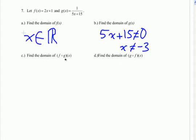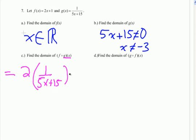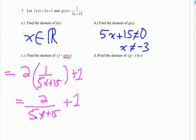Last one: start with f of g of x. The domain of g of x: it's a rational function, denominator can't equal zero. Subtract 15, divide by 5, x can't equal negative 3. Now plug g of x into f of x and get 2 times 1 over (5x plus 15) plus 1, which simplifies to 2 over (5x plus 15) plus 1. The denominator still can't equal zero, and it's the same denominator as the original, so we get the same restriction: x can't equal negative 3.